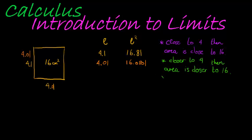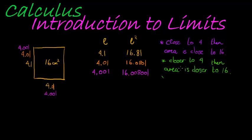Let's try one more: what about 4.001? So both side lengths are 4.001. When I square 4.001, I get 16.008001. It's true again — when I get closer to 4, the area is closer to 16.